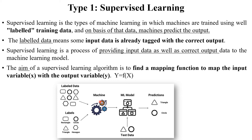The supervised learning algorithm finds the mapping function — it maps your input variable X to the output variable, meaning it maps the image of a circle to the label 'circle'. This is called mapping. The key concept of supervised learning is that we pass labeled input data to the machine for training purposes.